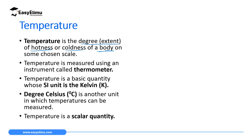Temperature is measured using an instrument called a thermometer, and we will discuss different types of thermometers at the end of this lesson. Temperature is a basic quantity, meaning it can only be obtained using a measuring instrument and cannot be derived from other physical quantities. The SI unit is kelvin — this is what we call thermodynamic temperature. Another commonly used unit is degree Celsius. Temperature is also a scalar quantity, meaning it has magnitude only but no direction.